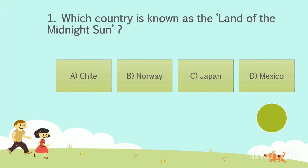Question No. 1. Which country is known as the land of the midnight sun? Option A: Chile. Option B: Norway. Option C: Japan. Option D: Mexico. Your time starts now. The answer is Option B: Norway.